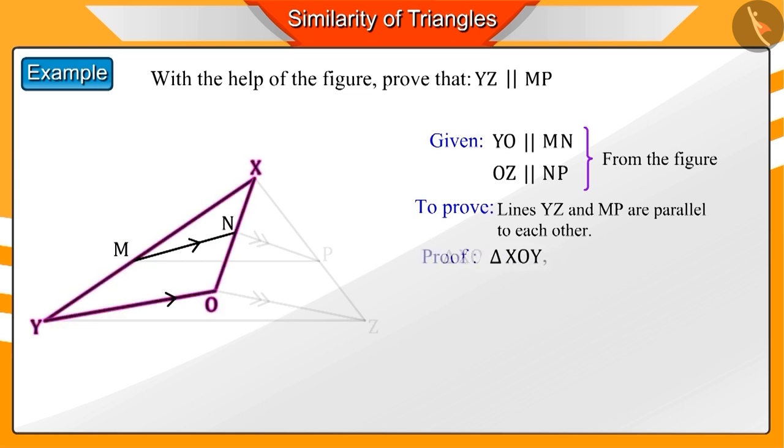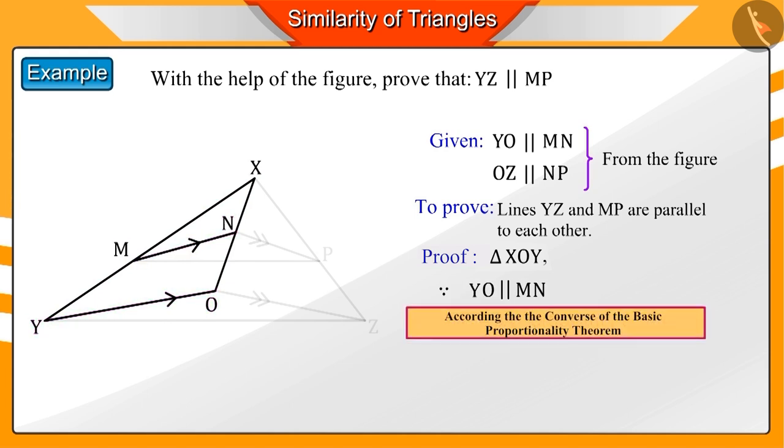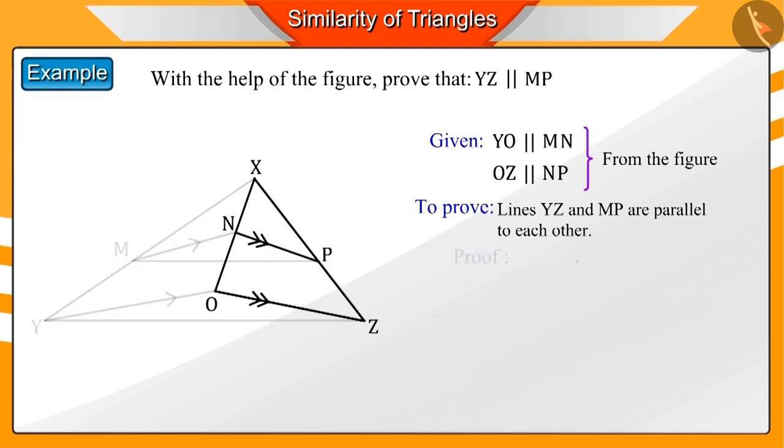If we observe the triangle XOY, we get to know that the line MN is parallel to the line YO. Hence, according to the basic proportionality theorem, XM by MY equals XN by NO, which is represented by equation 1. Similarly, we can derive equation 2 from the triangle XOZ.